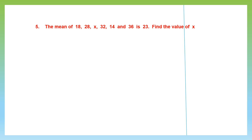Question 5. Now this is a slightly different question. The mean of all these numbers — 18, 28, x, 32, 14, and 36 — is 23. So they're already telling us what the mean is, and now we have to find the value of x.